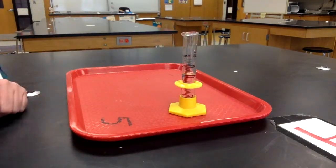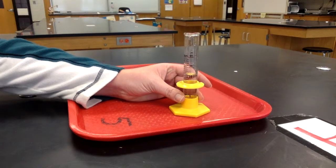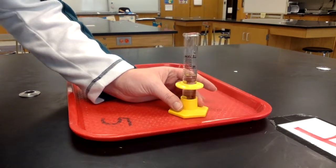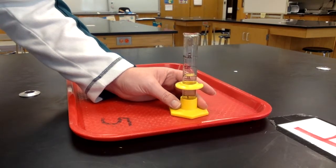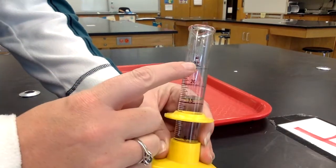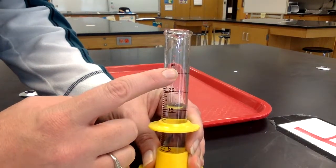I would first measure the amount of water in the graduated cylinder before I put the object in. This currently has 16 milliliters of water. I know it is milliliters because at the top it has ml.